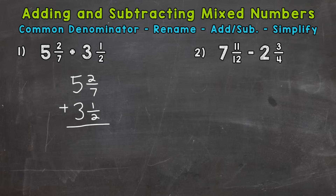The first thing we want to do is see if we have a common denominator between our fractions — can we add our fractions right away? No, we don't have a common denominator, so we need to find one and rename. We have a 7 and a 2, so the least common denominator for 7 and 2 is going to be 14. So let's rename here.